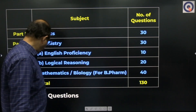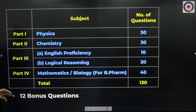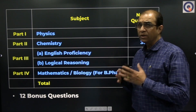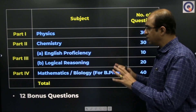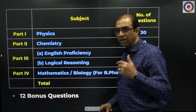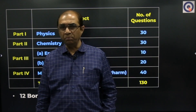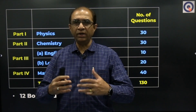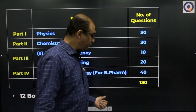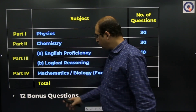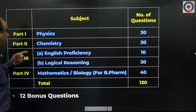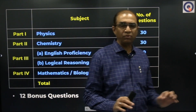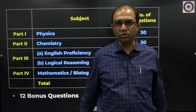BITSAT has a unique feature: bonus questions. After you answer all 130 questions, if you have time remaining (total time is 3 hours, 180 minutes), you can opt for 12 bonus questions. The breakup is 3 from Physics, 3 from Chemistry, 3 from Logical Reasoning, and 3 from Mathematics or Biology. The marking scheme is the same for bonus questions. This is an additional facility for meritorious students who want to score beyond 390.